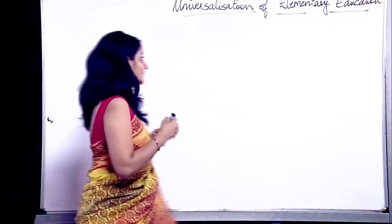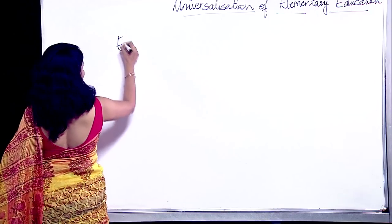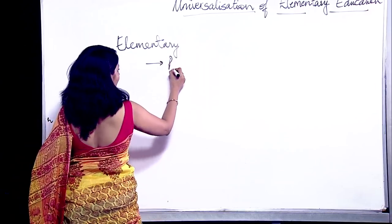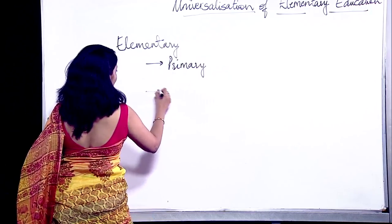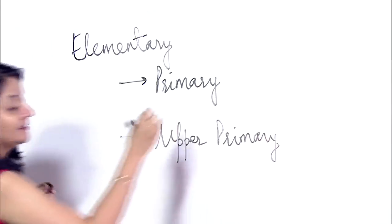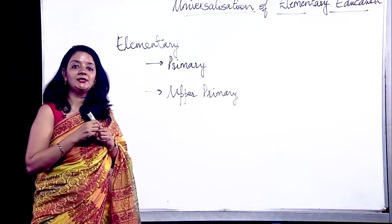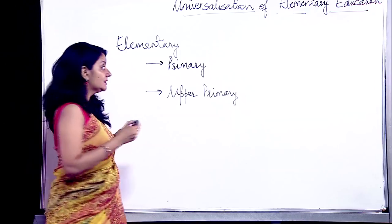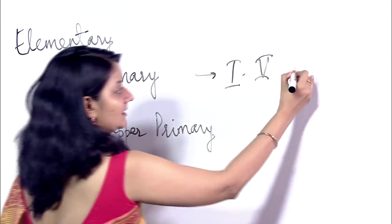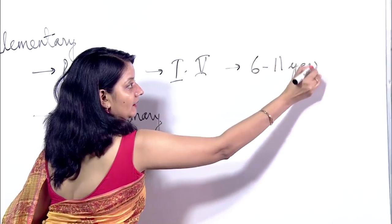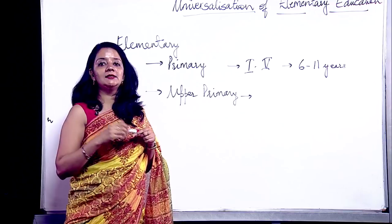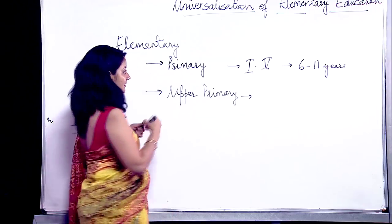The elementary level of education is divided into two parts: the first is primary and the second is upper primary. Primary is for the age group of six to eleven years, covering classes one to five. The upper primary stage is for classes six to eight, with the age group of eleven to fourteen years.